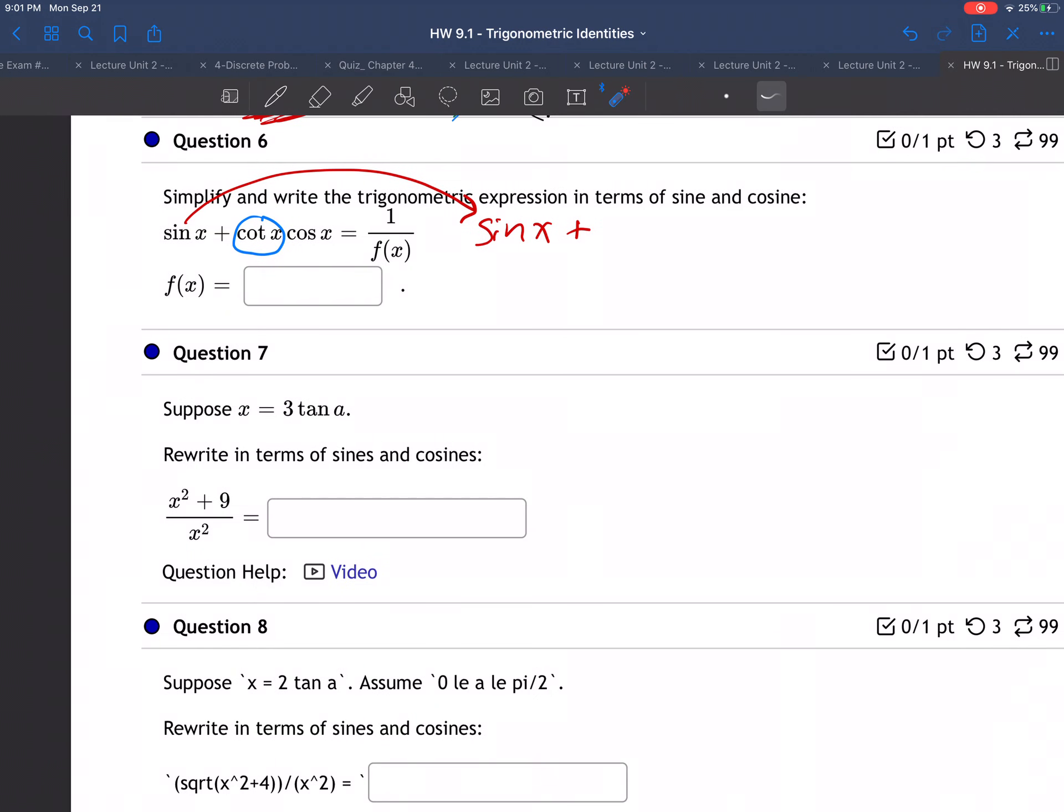So cotangent is cosine of x over sine of x times, and then there's the other cosine. Is that good? So we wrote everything in terms of sine and cosine.